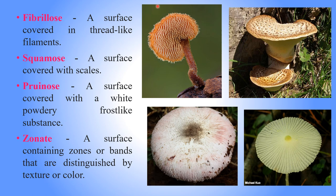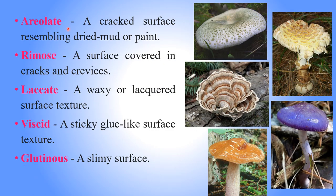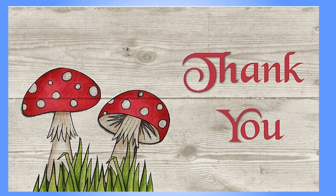Fibrillose — the surface is covered with thread-like filaments. Squamose — the surface is covered with scales. Pruinose — the surface is covered with a white powdery substance. Zonate — a surface containing zones or bands. Areolate — a cracked surface. Dry mousse — surface covered in cracks. Lacquate — a waxy surface texture. Viscid — a sticky, glue-like surface texture. Glutinous — a slimy surface.